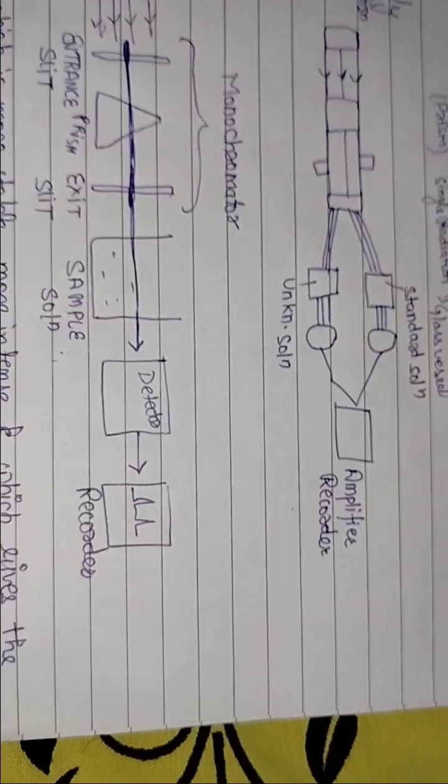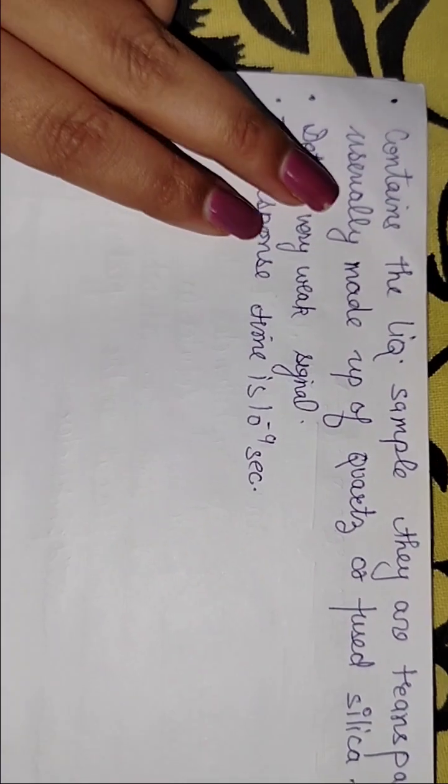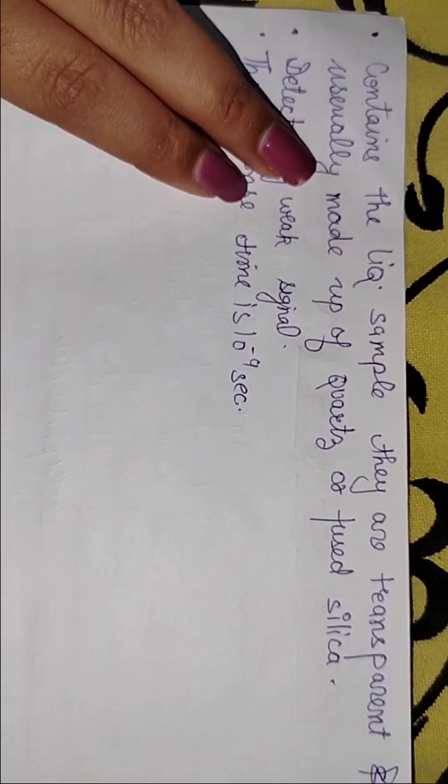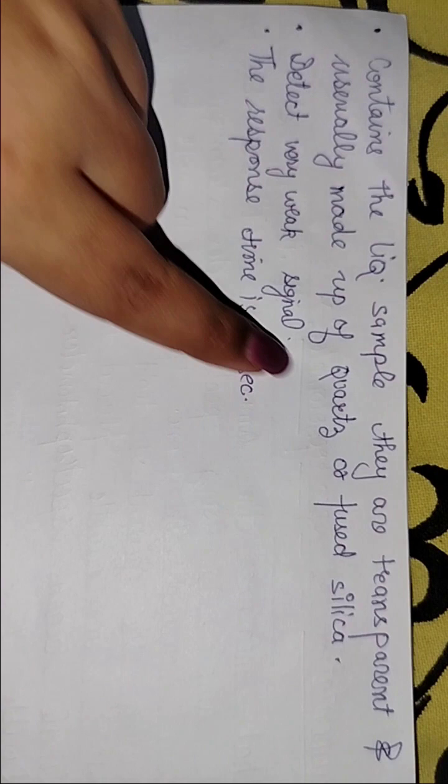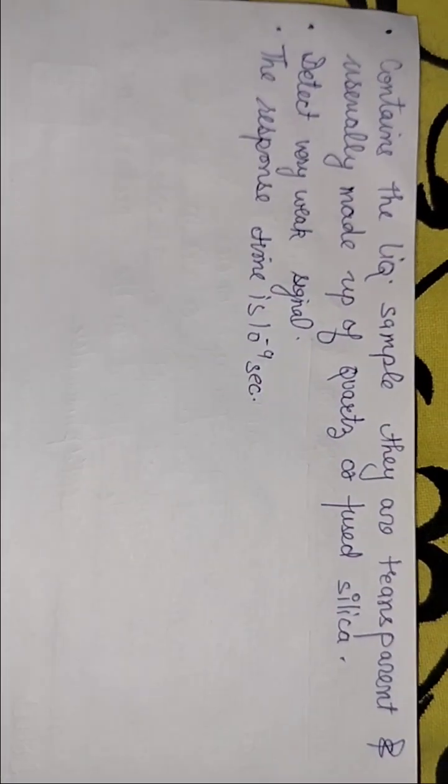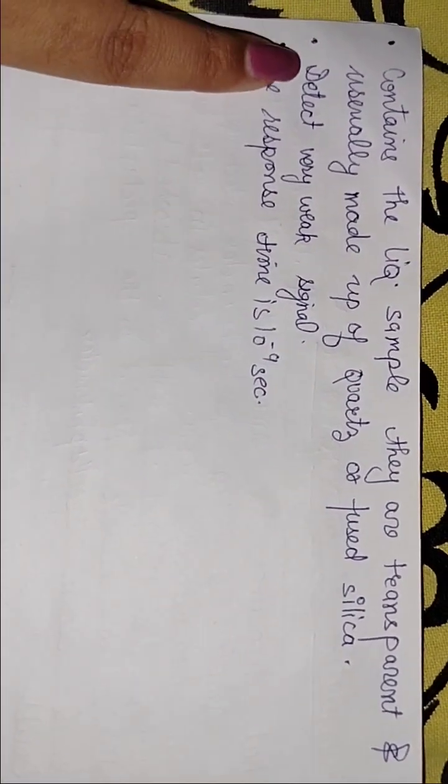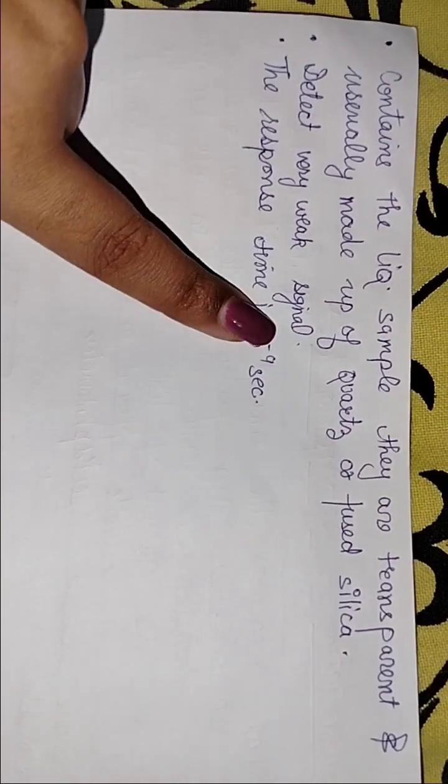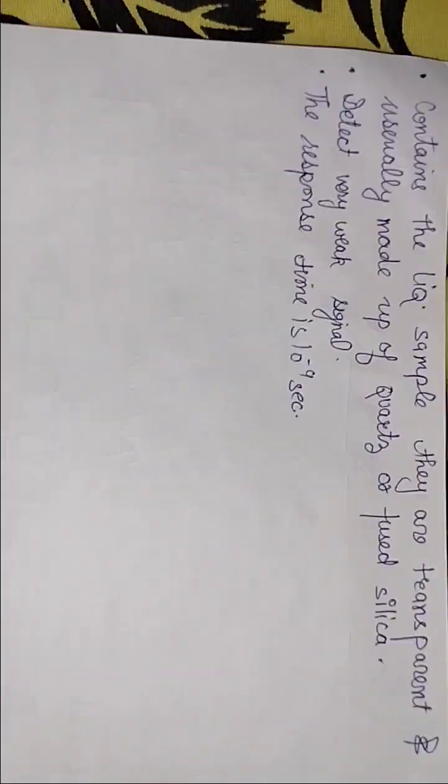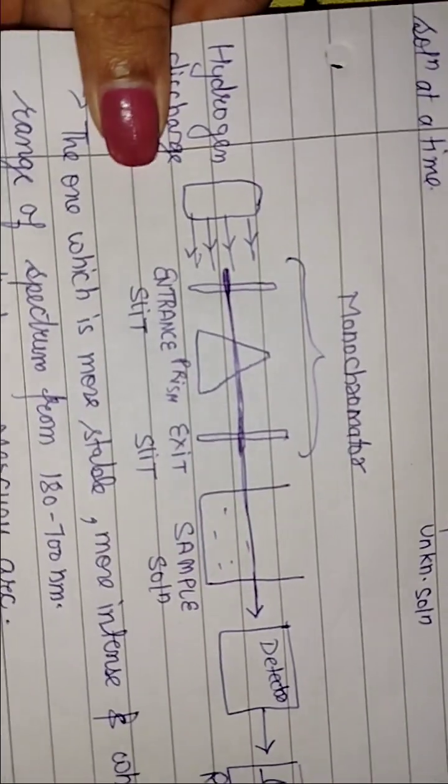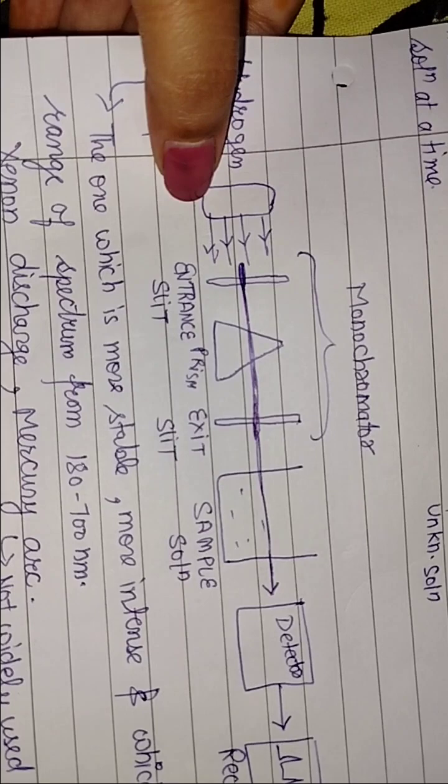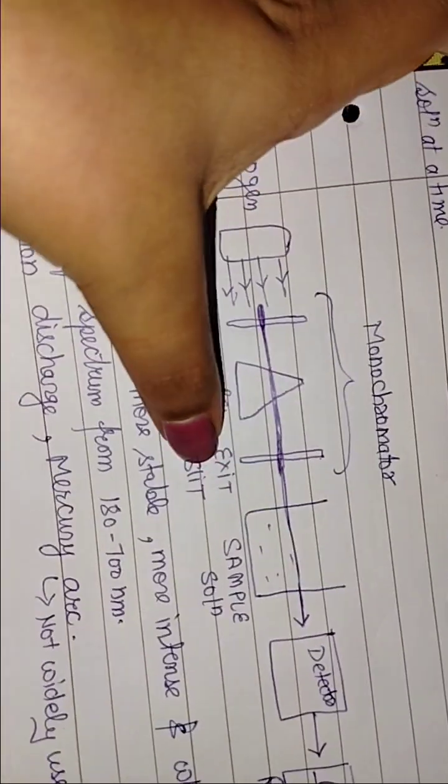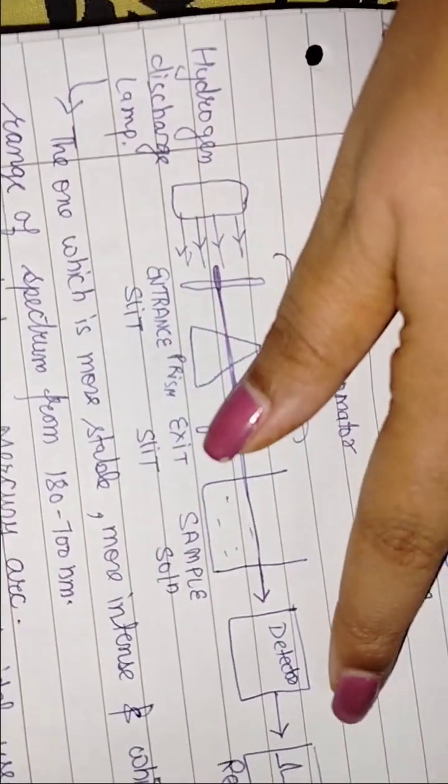The detector will record. It was very simple instrumentation. You can also write the workings as well as the cuvets hold the liquid samples and it is transparent and made up with quartz and silica. The detection is a big signal and the response is very fast. The important tools are light source, monochromator, cuvet, detector and recorder.